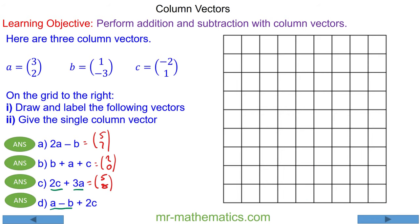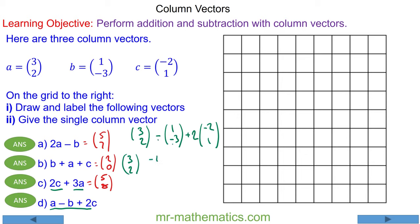And finally for question d we have a which is 3 and 2, minus b which is 1 and negative 3, plus 2c which is 2 lots of negative 2 and 1. So we have 3 and 2 which is a. A negative times 1 is going to be negative 1, and a negative times negative 3 is going to be positive 3. Then we have 2 times negative 2 which is going to be negative 4, and 2 times 1 which is going to be positive 2.